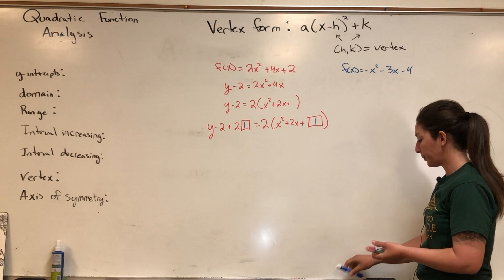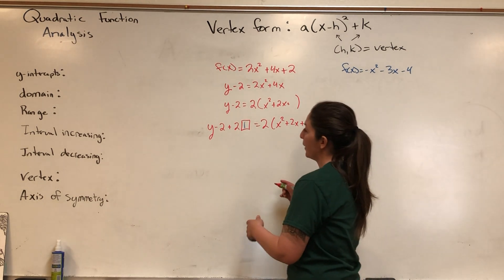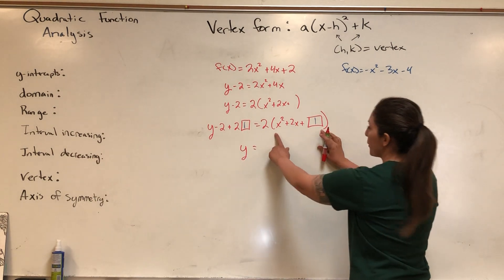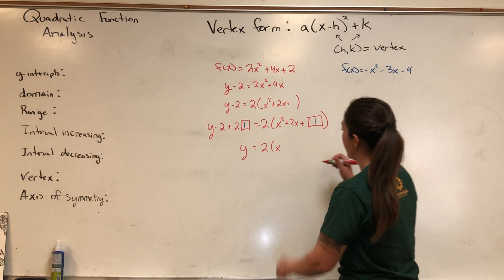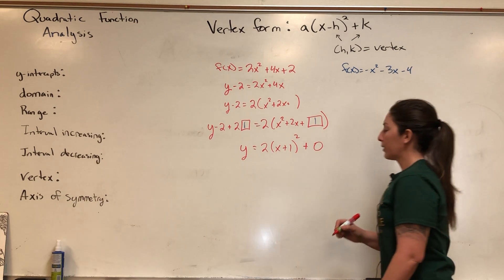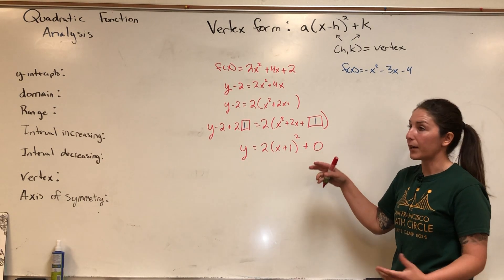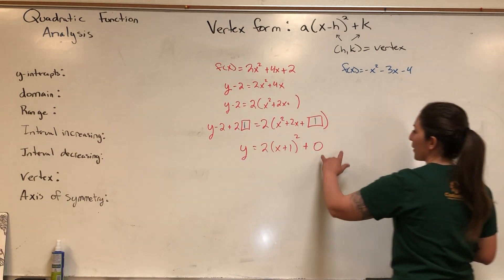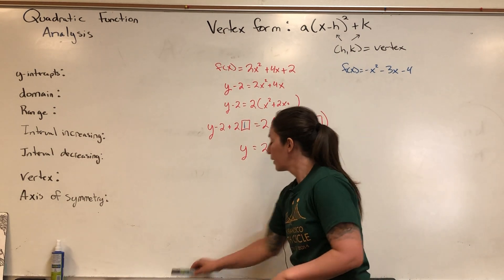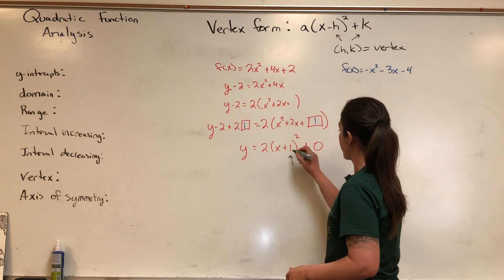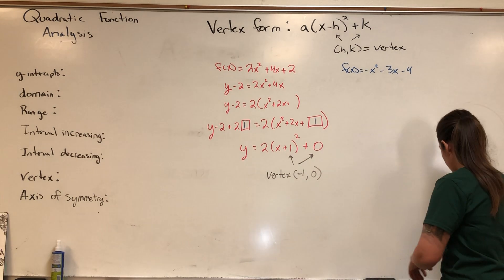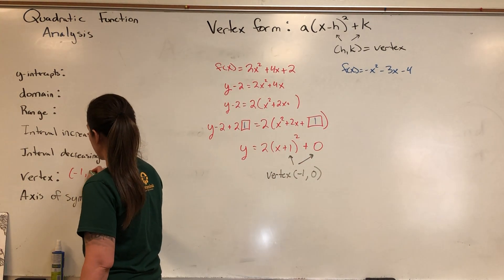The completing the square step: half the b term and square it. Half of 2 is 1; 1 squared is 1. So our magic number is 1. What we add on the right, we add on the left — but factoring means we actually add 2 times 1 equals 2 on the left. Simplifying the left side: y minus 2 plus 2 gives us just y. Completing the square on the right: 2 times (x plus 1) squared plus 0.